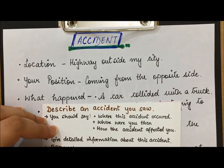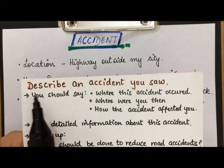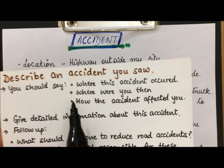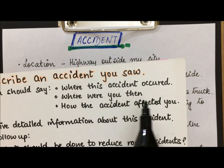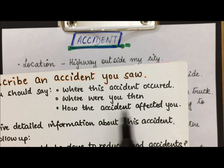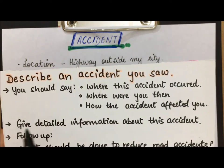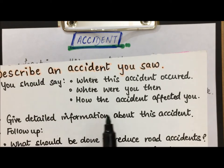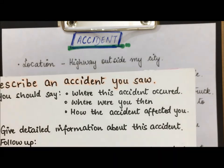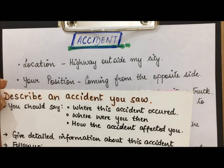Today's cue card will be about an accident that you saw. The question is: describe an accident you saw. You should say where this accident occurred, where you were at the time, how the accident affected you, and give detailed information about the accident. Now let's have a look at all the specific points we will cover.